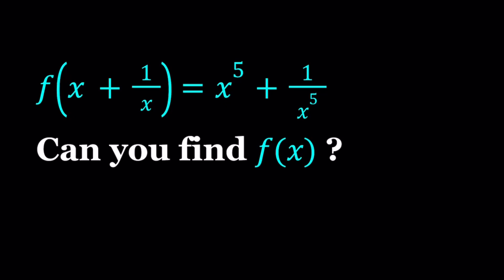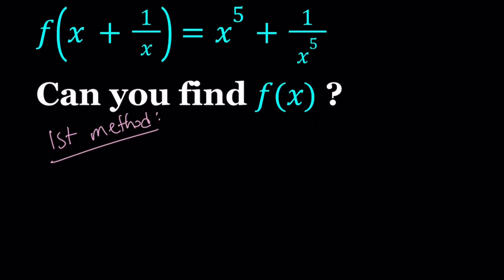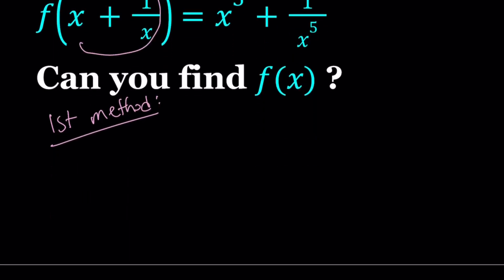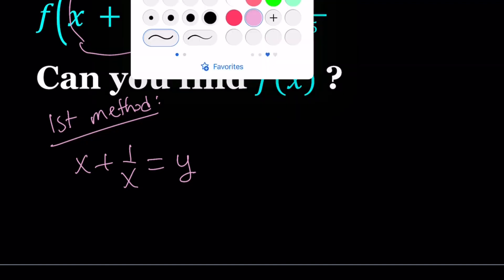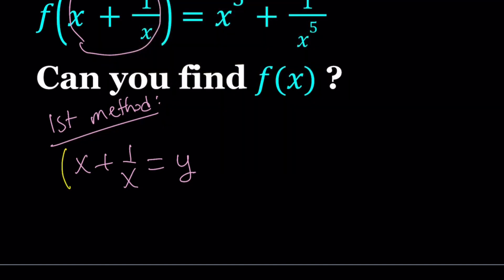We're going to use substitution here, and I'll be presenting three methods. Let's start with the first one. For my first method, I'm going to set this expression equal to y. From here, we're going to square both sides.